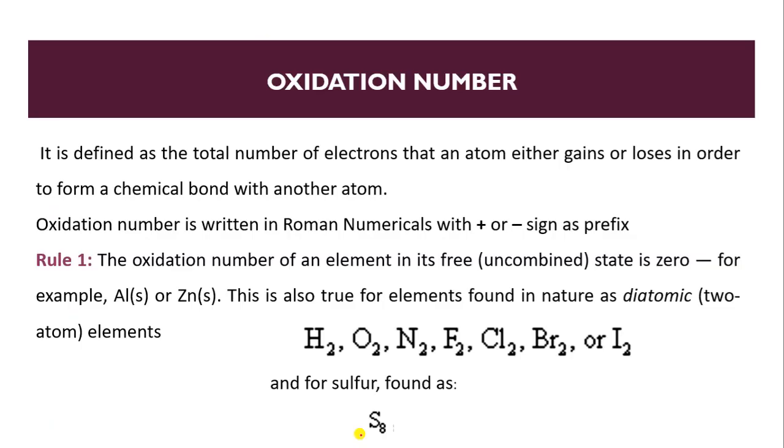Redox number is generally given by oxidation number. So what is oxidation number? It is defined as the total number of electrons that an atom either gains or loses in order to form a chemical bond with another atom. Oxidation number is written in Roman numerals with plus or minus sign as a prefix.